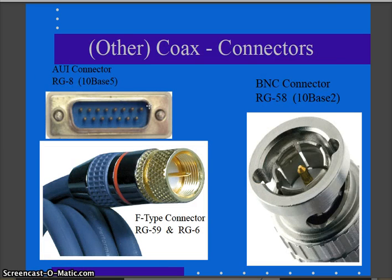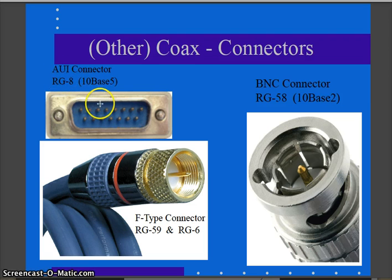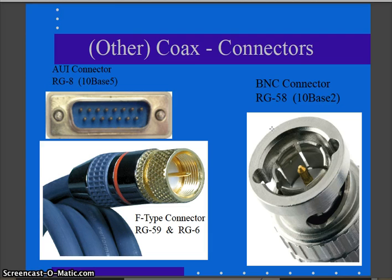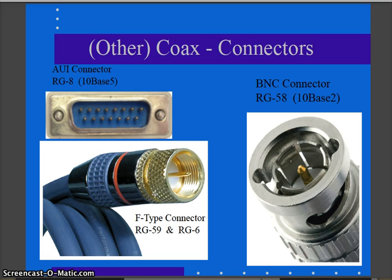Looking at the different connector types: here's the AUI connector — you can think of it almost like an old serial connection — used with the 10Base-5 Ethernet RG8 coax cable. Then things moved on to thinnet 10Base-2 using RG58 coax with BNC connectors. Moving to today, the F-type connector is used for RG59 or RG6 — similar to what you'd have for cable television or high-speed internet coming into your house.